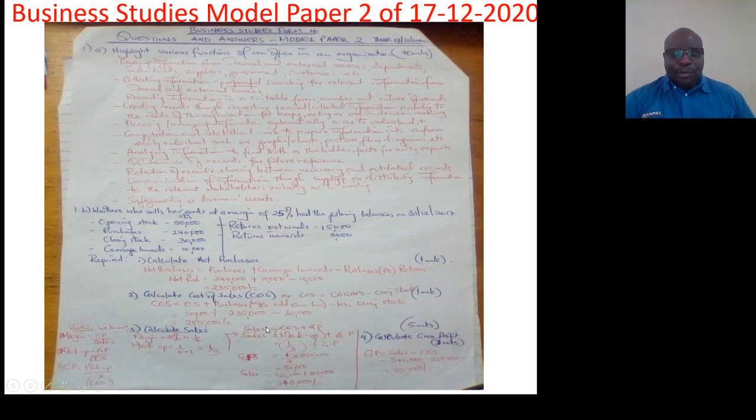So going back to our sales, sales is equal to cost of sales plus gross profit. And our sales here will be brought about by markup plus gross profit. And our markup here is a third plus gross profit. So gross profit will be a third of cost of sales which we found to be 255,000. So our gross profit will be 85,000 shillings. So our sales will be 255,000 plus 85,000 which will be 340,000.